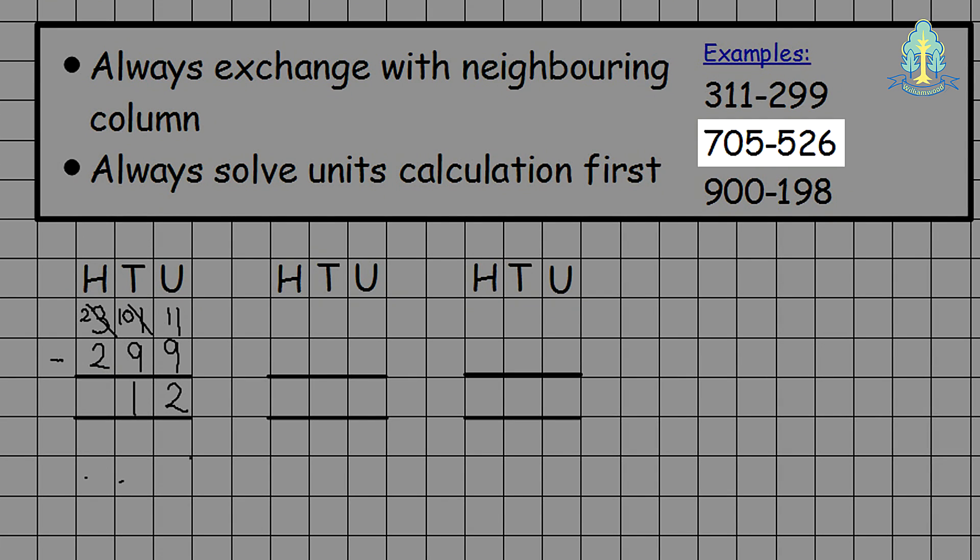The next value we're working with is 705 take away 526. Pupils subtract the units first. 5 take away 6 we can't do therefore we need to exchange. There are no tens to exchange from therefore we exchange from the nearest column with a value in it. 7 becomes 6 giving 10 tens.